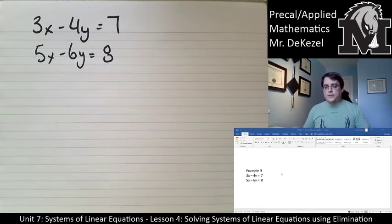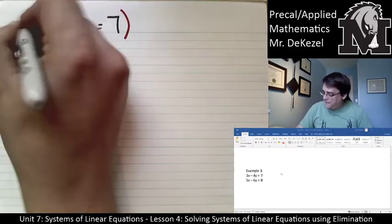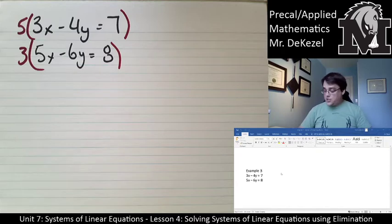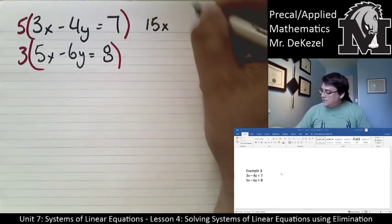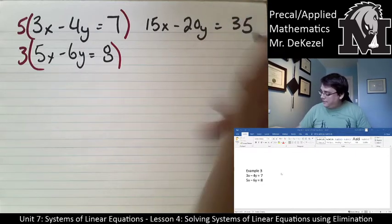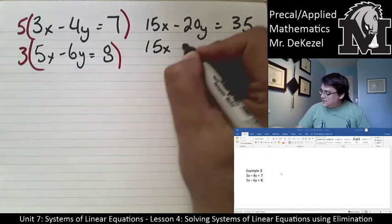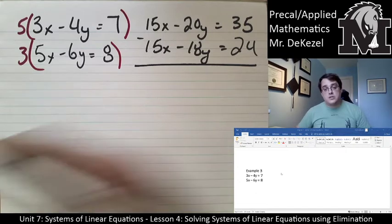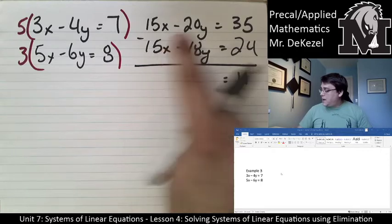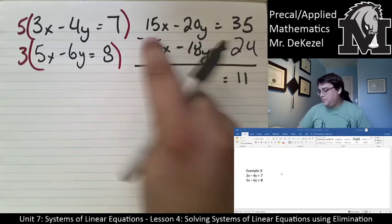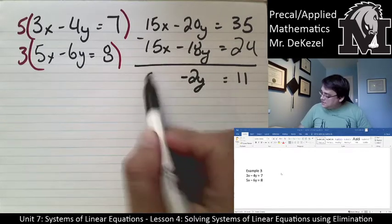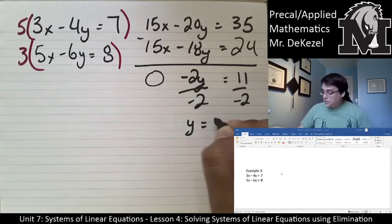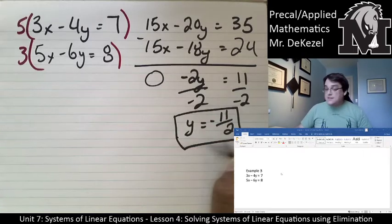I'm going to find a number to multiply both equations by to make them line up. If I multiply the first by 5 and the second by 3, the x's will both become 15. So: 5(3x − 4y = 7) gives 15x − 20y = 35; 3(5x − 6y = 8) gives 15x − 18y = 24. Subtracting: 35 − 24 = 11; −20y − (−18y) = −2y; 15x − 15x = 0. Dividing by −2, y = −11/2.